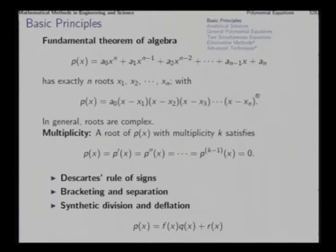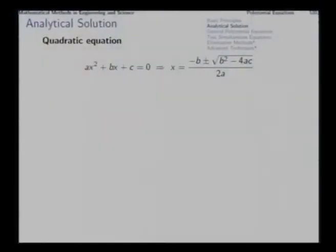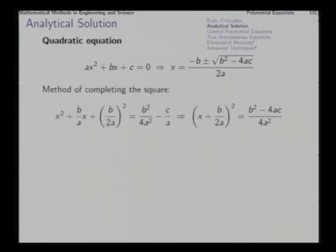The simplest polynomial equation is the linear equation, which is extremely simple. Above that, you have the quadratic equation. The quadratic equation has the solution with plus-minus sign: x equals minus b plus-or-minus square root of b squared minus 4ac, all over 2a. Depending upon what b squared minus 4ac is, the solutions could be complex or real. The formula is arrived at through completing the square, taking the square root.